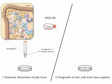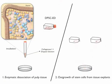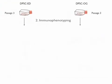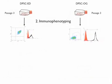In the second method, pulp tissues are only placed into the flask without any digestion. In this way, DPSCs begin to migrate from the tissue into the flask. These cells are named OG, referring to the outgrowth isolation method.